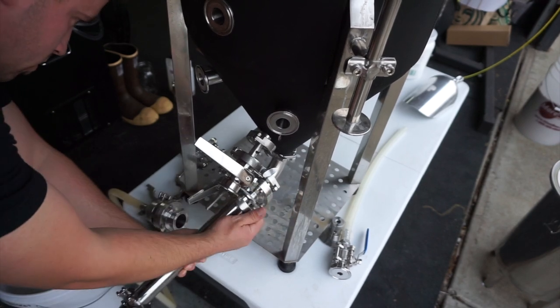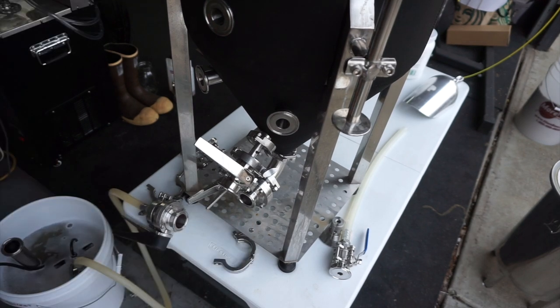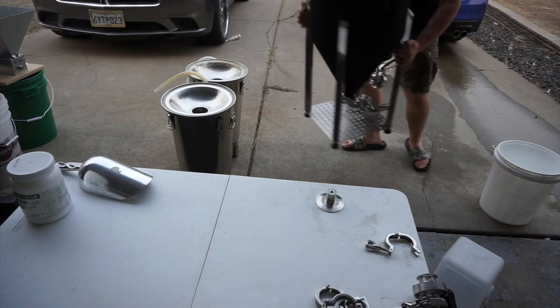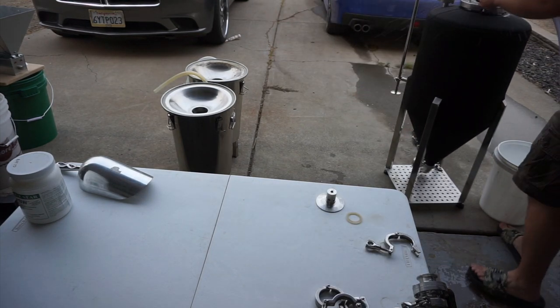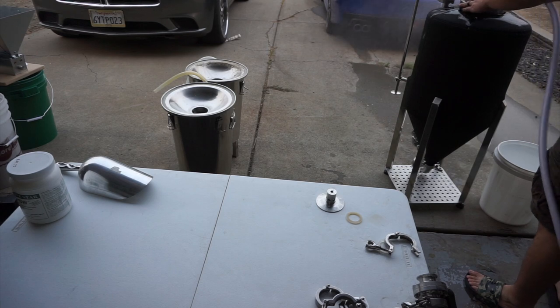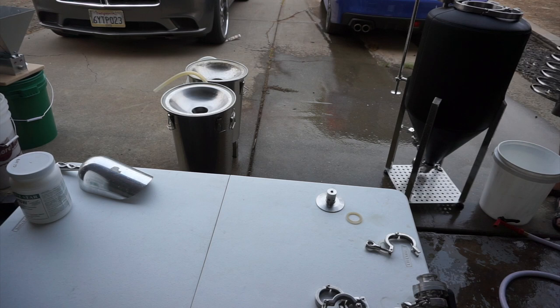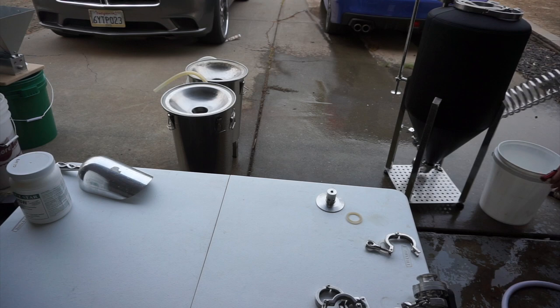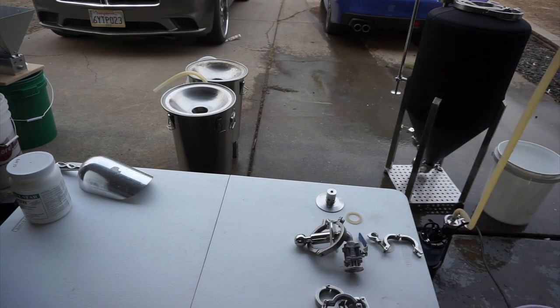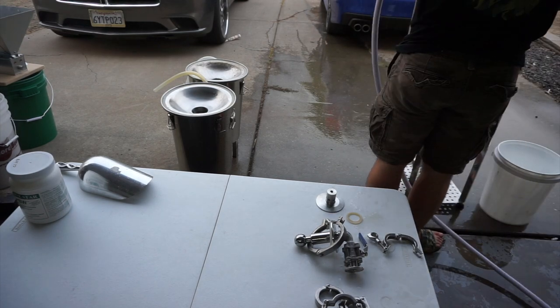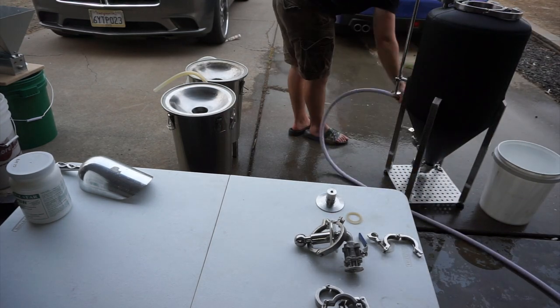Once you've went through every single port, now we can fully disassemble the fermenter. You're taking off the bottom, you're taking off the racking arm, you're taking off everything that was in there, and you're going to soak it in the same PBW that you just used to recirculate with. I like to take the hose one last time, this is the last time I'll use tap water, to give everything a rinse inside and out, trying to remove any of that PBW residue that you possibly can before the next step.